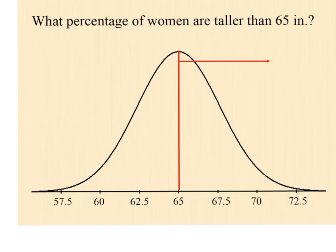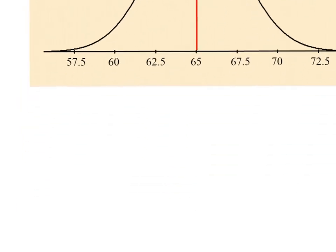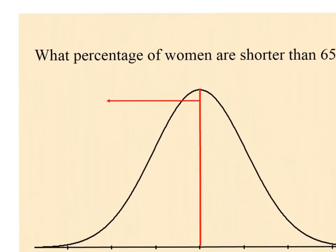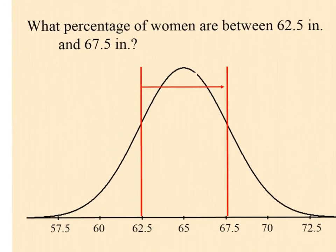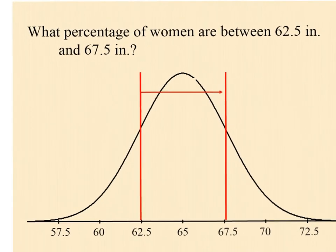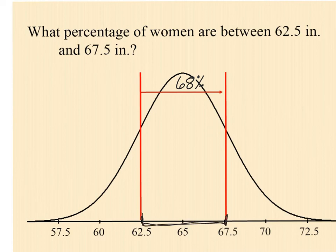What percentage of women are taller than 65 inches? 50% — because 65 is the mean. What percentage are shorter than 65 inches? Also 50%. What percent are between 62.5 and 67.5 inches? 68% — because of the 68-95-99.7 rule, that's within one standard deviation of the mean.